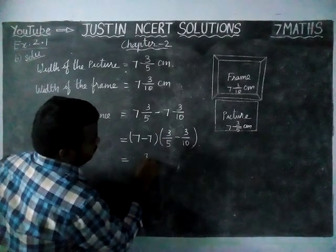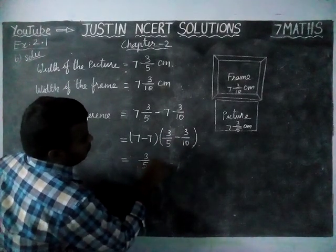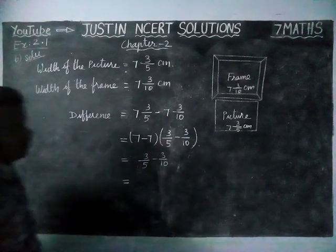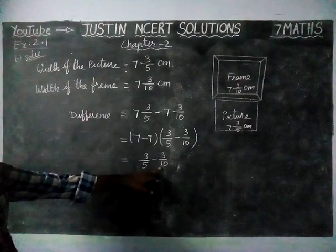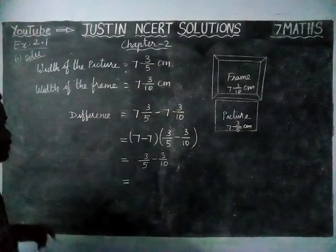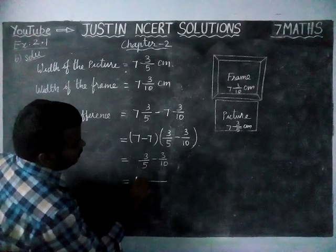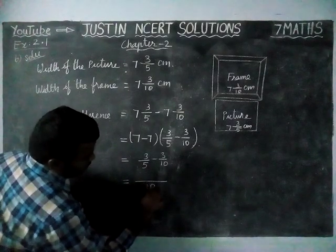3 by 5 minus 3 by 10. Now the denominators are different. First, we have to convert this denominator to be equal. So we are going to convert by 10.